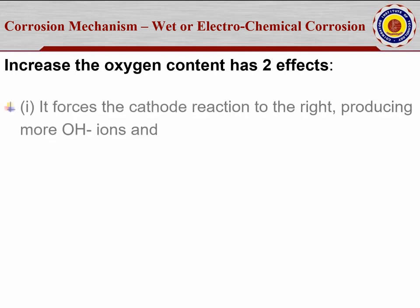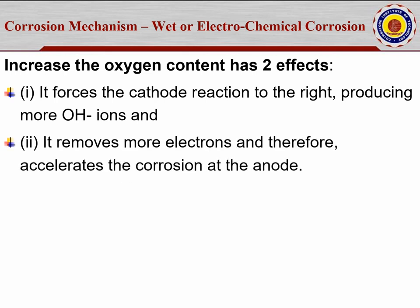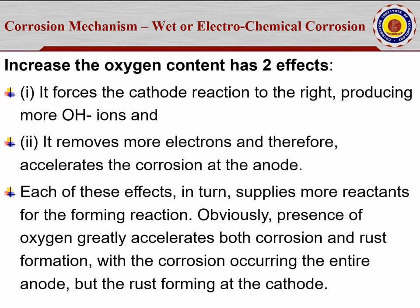Increasing the oxygen content has two effects: it forces the cathodic reaction to the right, producing more OH⁻ ions, and it removes more electrons, thereby accelerating the corrosion at the anode. Each of these effects in turn supplies more reactants for the forming reaction. Obviously, the presence of oxygen greatly accelerates both corrosion and rust formation. More oxygen content leads to more corrosion and rust formation, whereas less oxygen — as when concrete is fully immersed — may not lead to corrosion and rust formation.